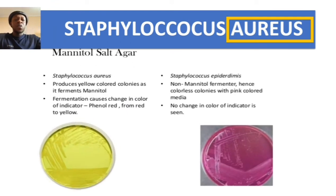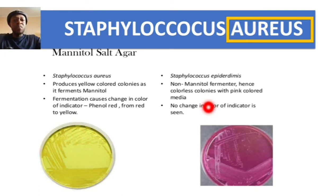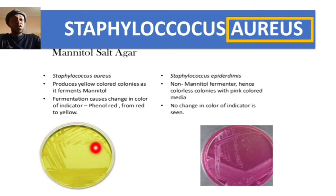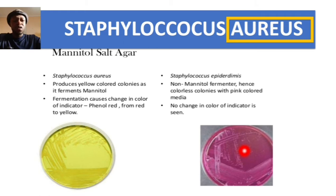Another way to differentiate Staph aureus from other species like Staph epidermidis is mannitol salt agar. Staph aureus can ferment mannitol, producing yellow-colored colonies. The indicator used is phenol red, which changes from red to yellow upon fermentation. Staph epidermidis is a non-mannitol fermenter, so colonies remain colorless with pink media — no color change in the indicator.